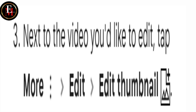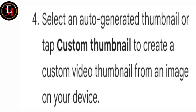Step number four is to edit the thumbnail. You can select an auto-generated thumbnail which YouTube automatically generates, or tap 'Custom Thumbnail' if you want to use an image from your device.